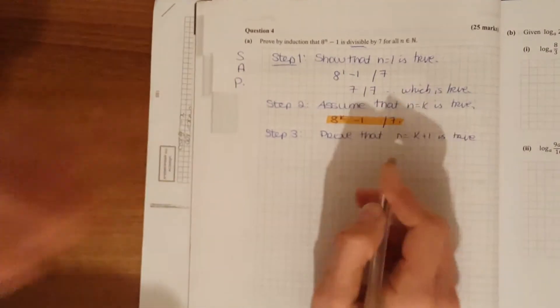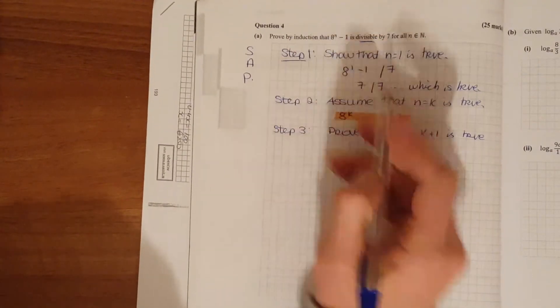Now divisibility proof by induction is probably the easiest of the lot. Solve k plus 1.